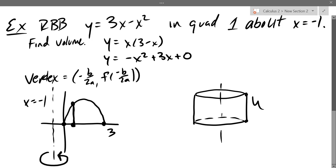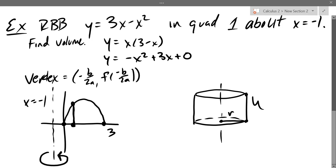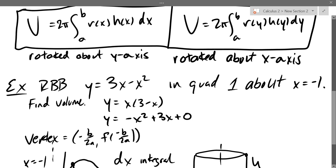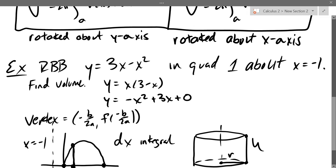So let's revolve our cross-section. There's our cross-section — we have a height and we have a radius. First of all, is this a dx or a dy integral? How do I squeegee my windshield? I've got to change my x-coordinates. This is going to be a dx integral. So we are using the dx version for volume, and we need R of x and H of x.